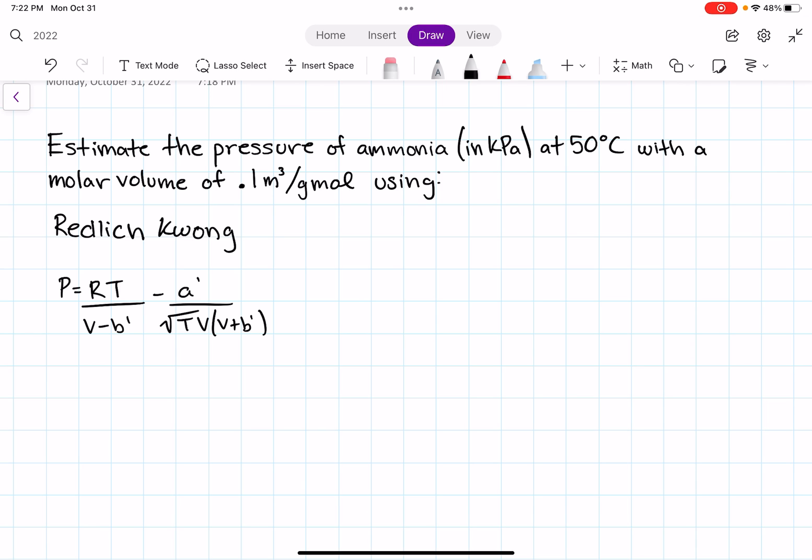The substance we're using is ammonia. Estimate the pressure - we're looking for pressure in kilopascals. The temperature is given to us as 50 degrees Celsius, but we don't want it in Celsius, we want it in Kelvin. So in Kelvin, that's equal to 323.15 Kelvin. What other things do they give us? They give us our molar volume, so V, which is going to be 0.1 meters cubed per gram mole.